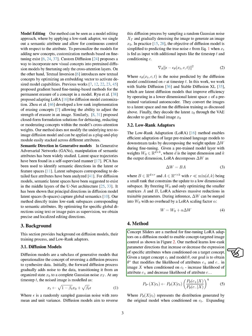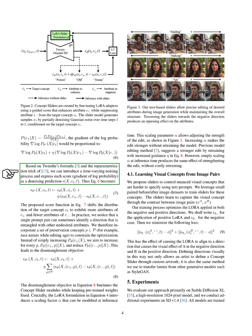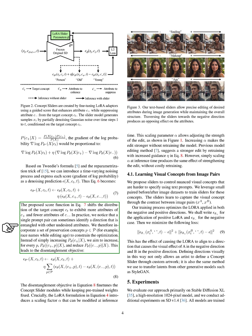Concept sliders are a method for fine-tuning LoRA adapters on a diffusion model to enable concept-targeted image control. Our method learns low-rank parameter directions that increase or decrease the expression of specific attributes when conditioned on a target concept. Given a target concept and model, our goal is to obtain a model that modifies the likelihood of attributes in an image when conditioned on the target concept, increasing the likelihood of one attribute and decreasing the likelihood of another. Based on Tweedie's formula and the reparameterization trick, we introduce a time-varying noising process and express each score as a denoising prediction. The proposed score function shifts the distribution of the target concept to exhibit more attributes of one and fewer of another. We notice that a single prompt pair can sometimes identify a direction entangled with other undesired attributes, so we incorporate a set of preservation concepts to constrain the optimization, leading to the disentanglement objective.